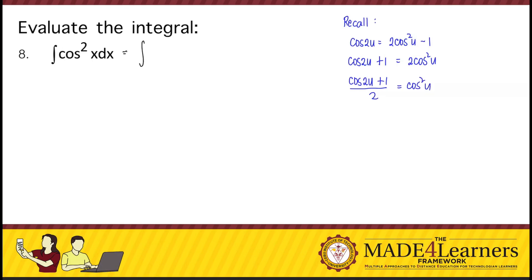Therefore, our integrand can be expressed as cosine of 2x plus 1 over 2 dx. So, that's the integral of cosine of 2x plus 1 over 2 dx.